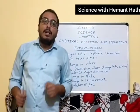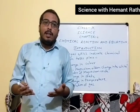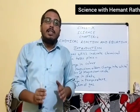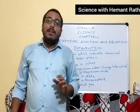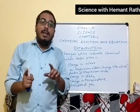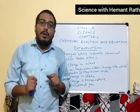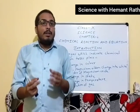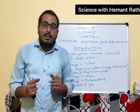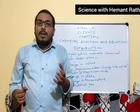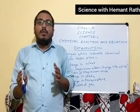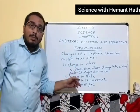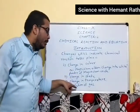Third one is change in temperature. If we find that in any process the temperature is changed, then we can say that the chemical reaction has taken place. For example, in activity number 1.3, when we add zinc granules in dilute sulfuric acid, hydrogen gas will emerge from that conical flask, and the temperature of the conical flask will be slightly changed. So on the basis of this characteristic, we can say that the chemical reaction has taken place.